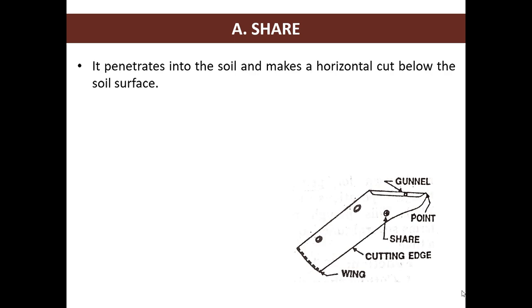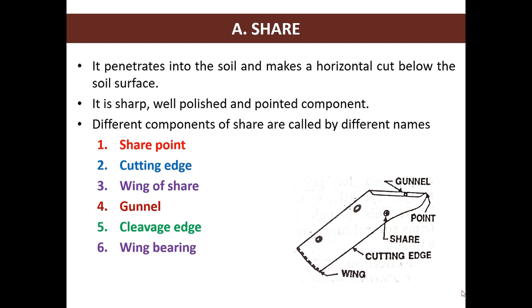We will now see the shear in detail. It penetrates into the soil and makes a horizontal cut below the soil surface. It is a sharp, well polished, and pointed component. Different components of shear are called by different names such as shear point, cutting edge, wing of shear, gunnel, cleavage edge, and wing bearing, as you can see labelled in the figure.